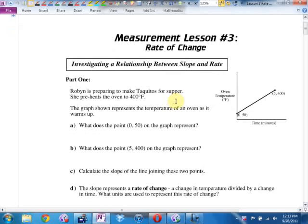Part 1 says Robin is preparing to make taquitos for supper. She preheats the oven to 400 degrees. This graph shows the heat of the oven increasing over time. Take a look at it. Here's your oven temperature in Fahrenheit. Time in minutes. Look at the numbers and let's see if we can answer some of this.